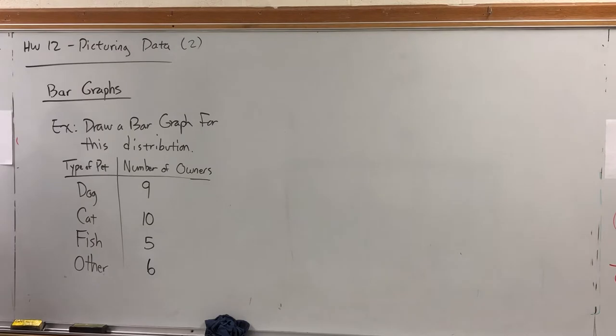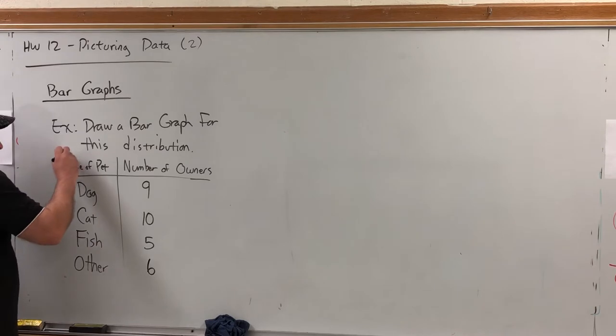A bar graph is a graph that shows bars to represent frequencies. For example, we're going to draw a bar graph of this distribution. Some people were asked what type of pet they owned, or what their favorite type of pet was. It's not very clear, so we should probably clarify it. We'll say favorite type of pet.